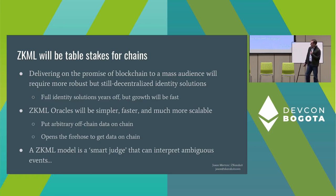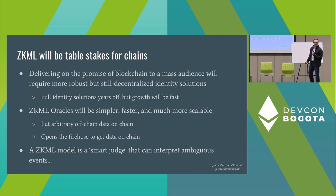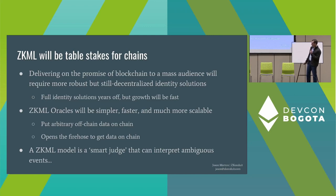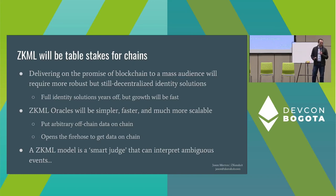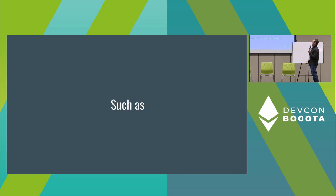You can imagine, for example, when account abstraction starts working, part of the account abstraction check is submitting a zero-knowledge proof of your identity — using this kind of 10,000-factor everything-about-me as one of the pieces. ZKML oracles will be simpler, faster, and more scalable for putting arbitrary off-chain data on-chain, and I think it really opens the firehose to what we can do. A ZKML model can be thought of as a smart judge that interprets ambiguous events.